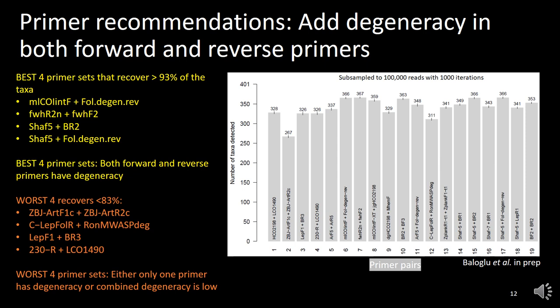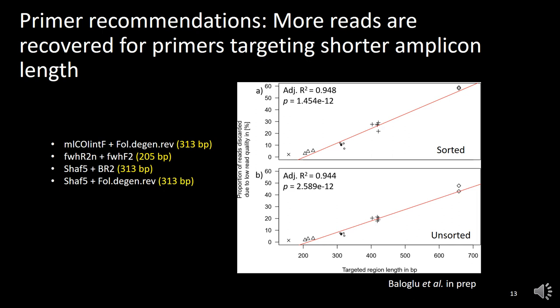If we look at these best 4 primer pairs in more detail, on the x-axis you see the targeted amplicon size and on the y-axis the proportion of reads removed due to low read quality during quality filtering. You can see a clear trend: the longer your amplicon size is, in both sorted and unsorted experiments, the more reads you lose. So if you want to retain more reads, you may be better off targeting a shorter CO1 fragment.